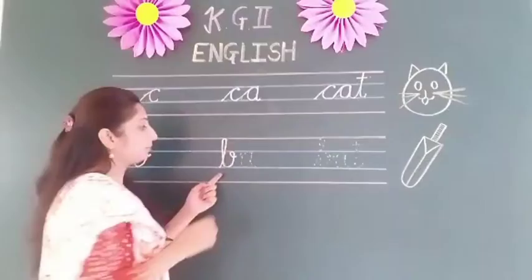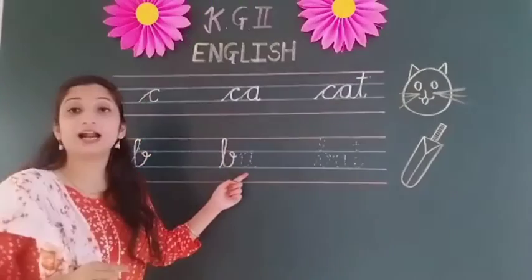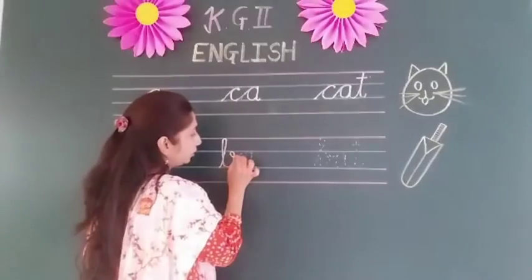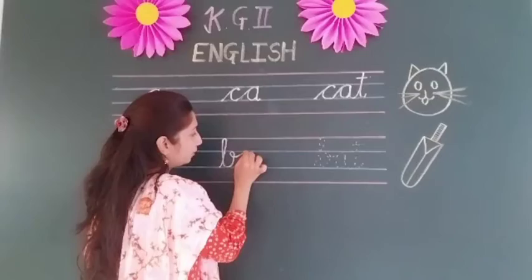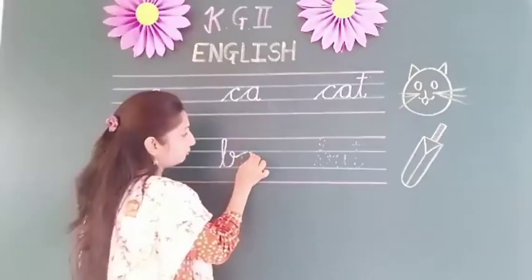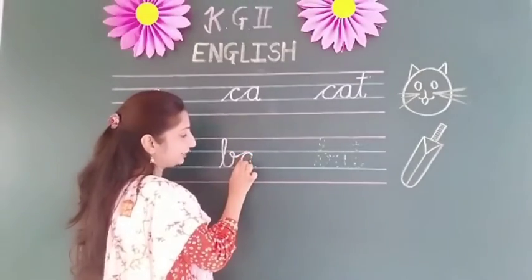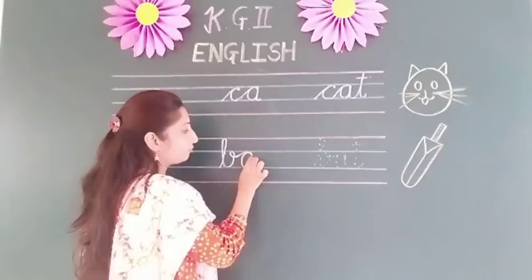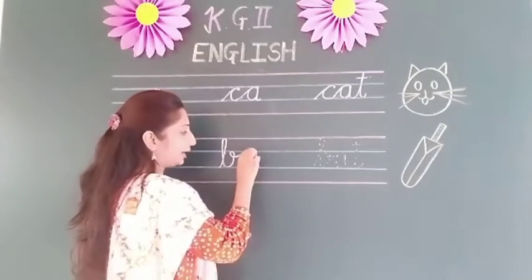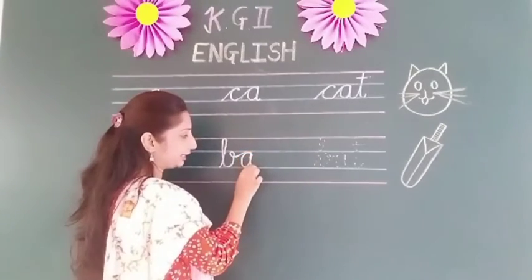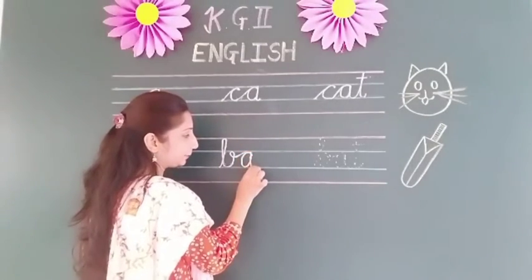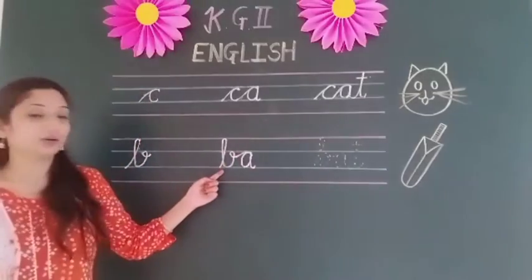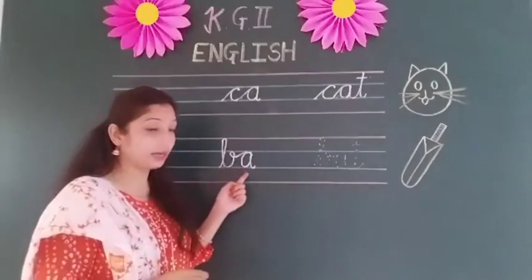Now we are adding one more letter. So make a curve, go back to the second blue line, go up to the first red line, back to the second blue line, and make a small curve. That gives us our small B — A.